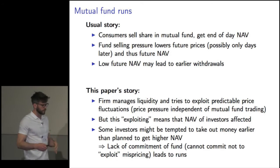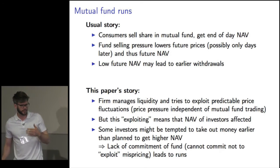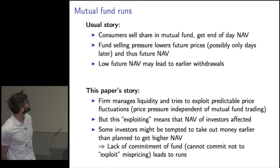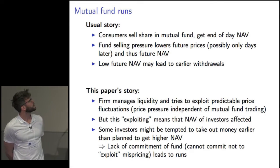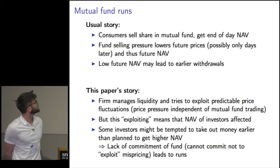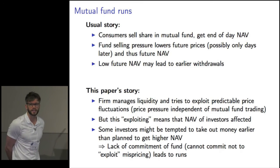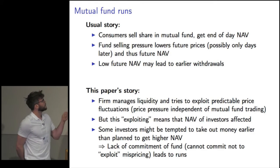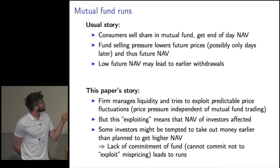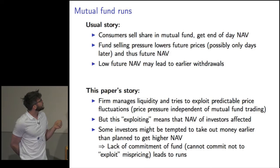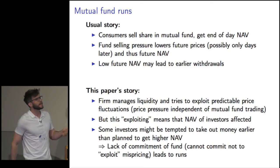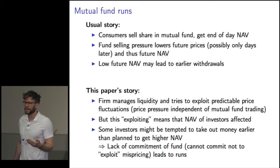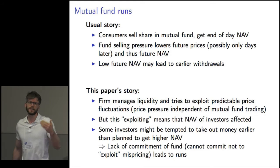The usual story in the literature on mutual fund runs is that consumers sell shares and get the end-of-day NAV. The fund's selling pressure then lowers future prices via the price impact of redemptions — the need to generate cash — and thus future NAV is lowered. Lower future NAV may lead to earlier withdrawals if investors anticipate liquidity needs on the horizon at which this price dislocation will apply.